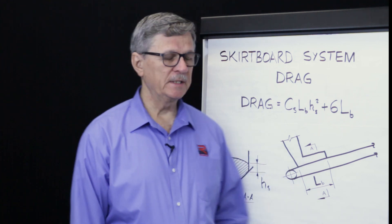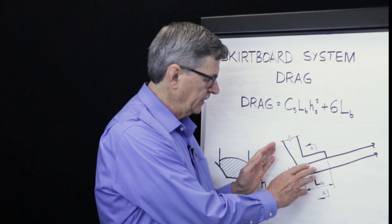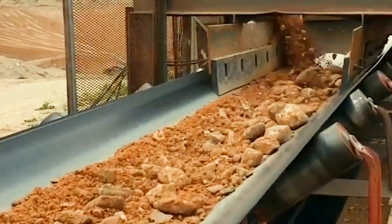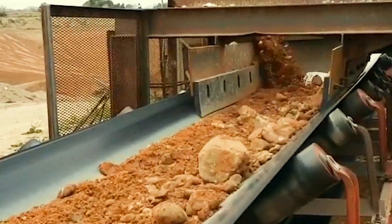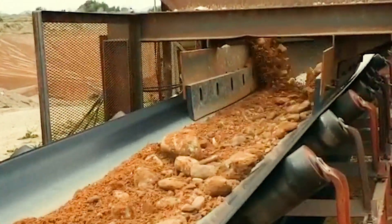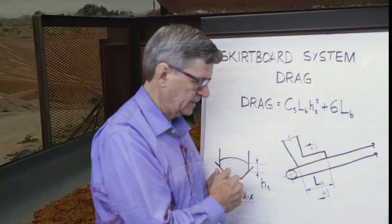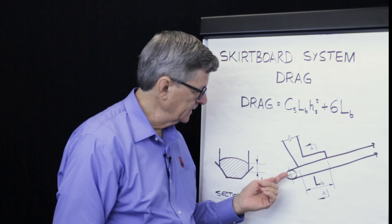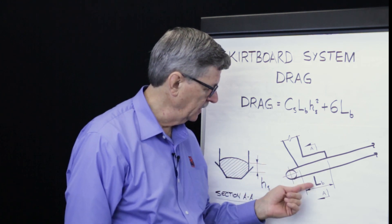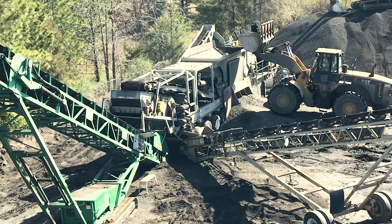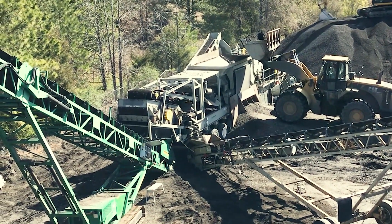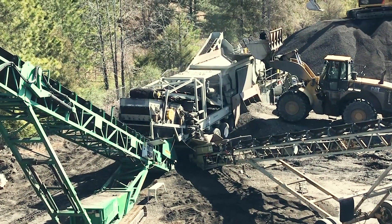Conveyor skirt board systems are used to contain material as it is transferred from one point onto a moving conveyor. The material is intended to be stabilized within the trough in the skirt zone. Normally the skirt zone length, LB, is short compared with the overall length of the conveyor because the purpose is to contain the material and stabilize it within the trough.